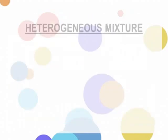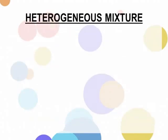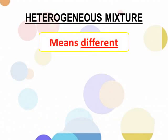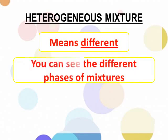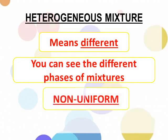The second one is heterogeneous mixture. Heterogeneous mixture means different — you can see the different phases or parts of the mixture. Heterogeneous mixture is non-uniform.